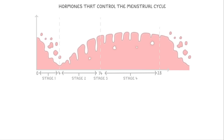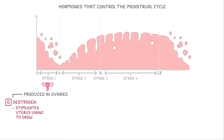The last thing to look at is the hormones that control the menstrual cycle. Estrogen, which is produced in the ovaries, stimulates the uterus lining to grow. We see the level of oestrogen increase in stage 2 as the uterus lining develops, and then fall once the lining is grown.